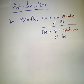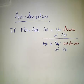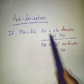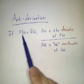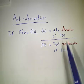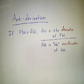Last concept, antiderivative. An antiderivative is just a function whose derivative is f. So if the derivative of big F is little f, we say little f is the derivative of big F, and big F is the antiderivative of little f.